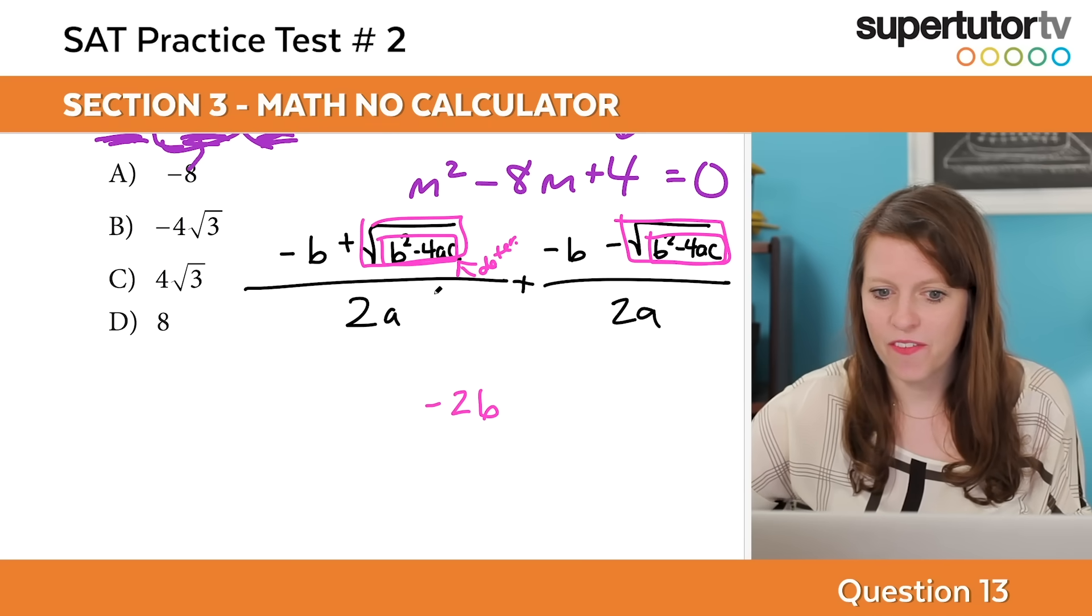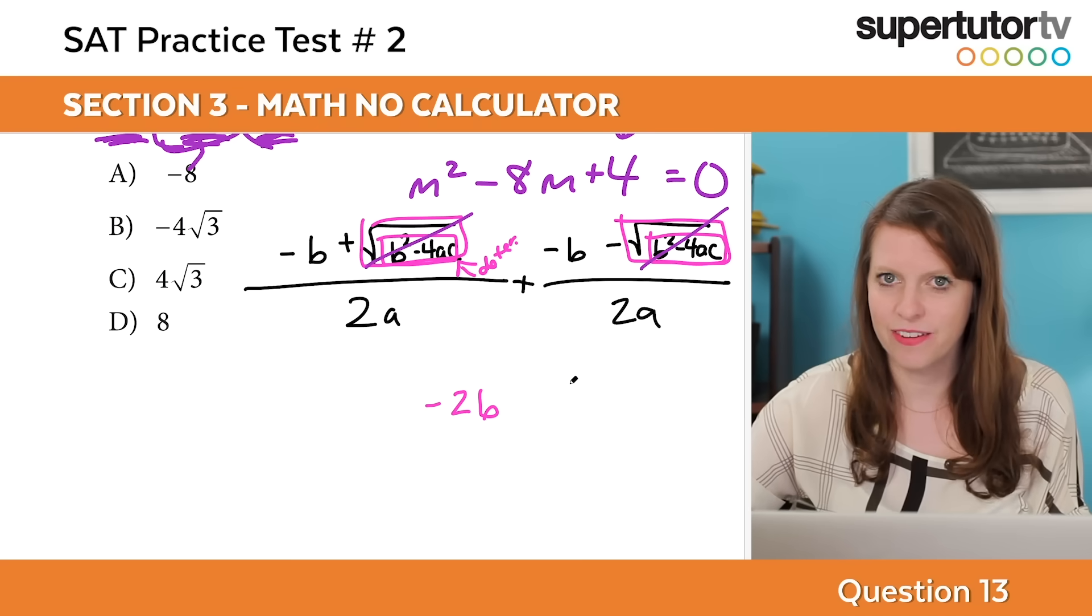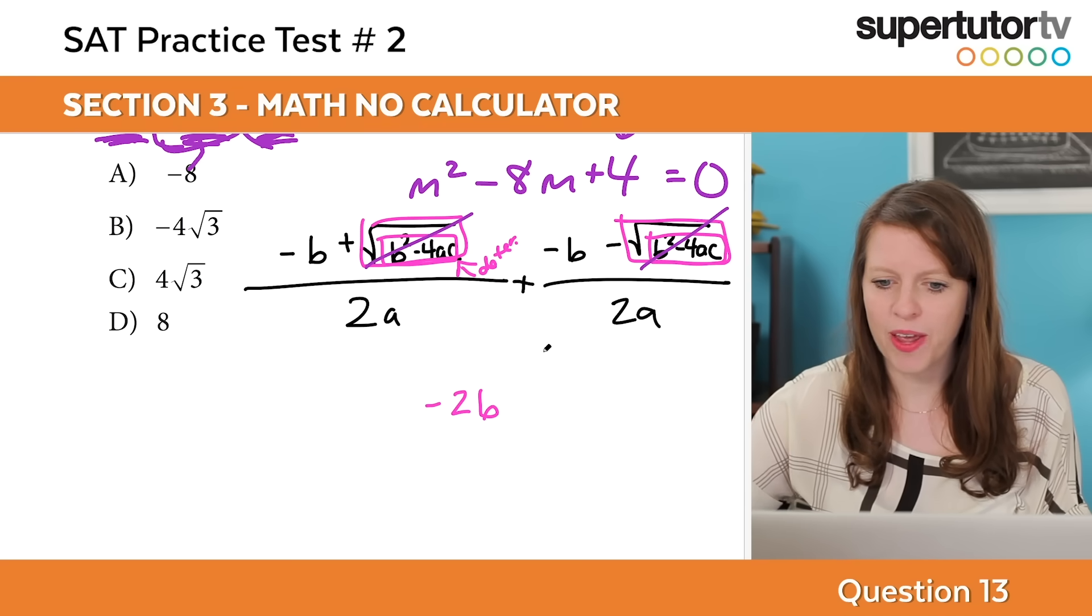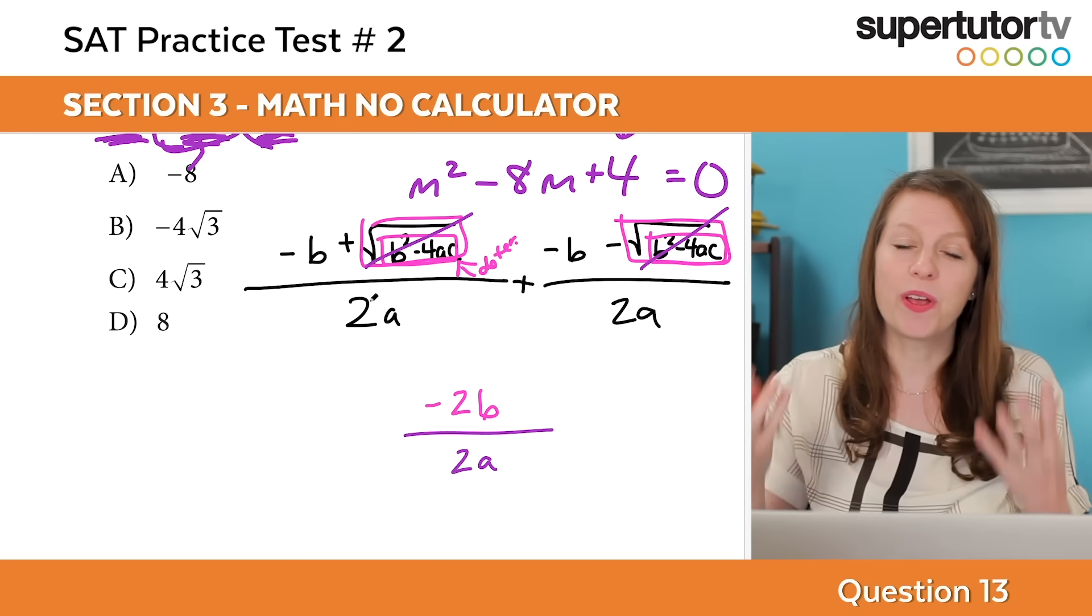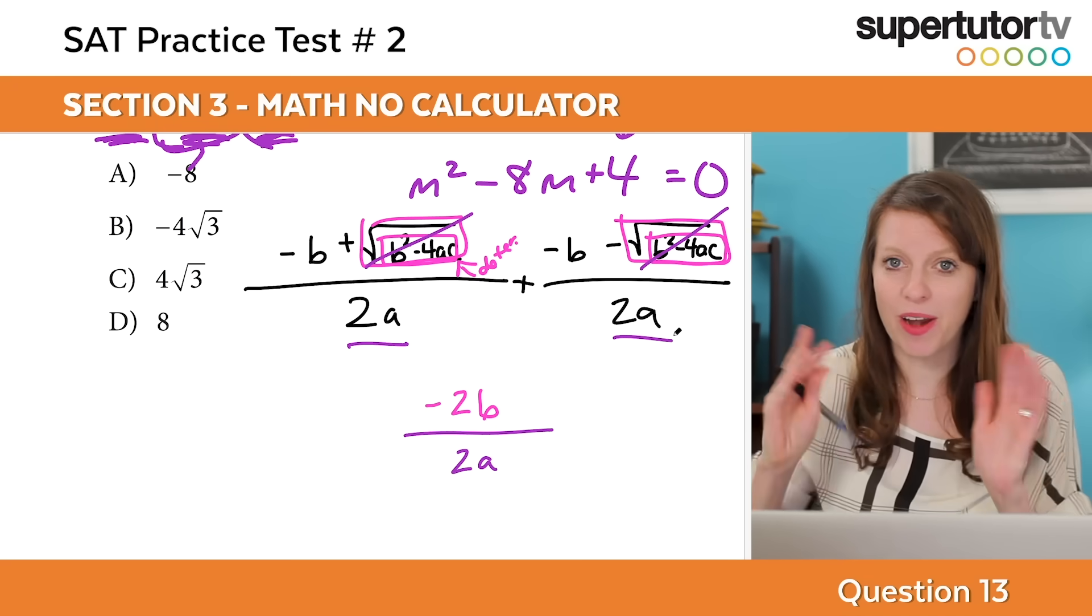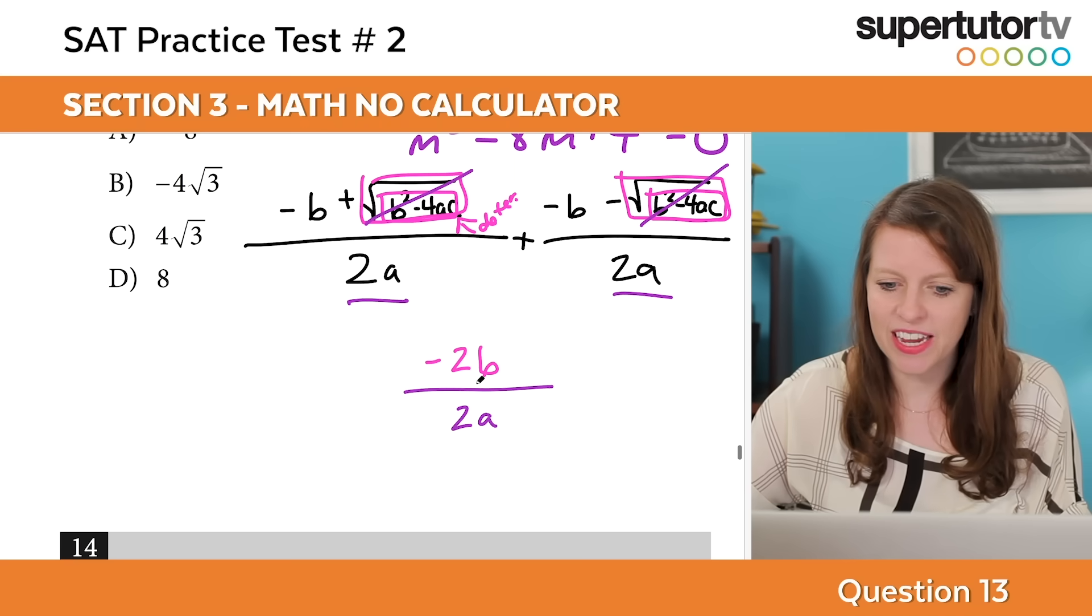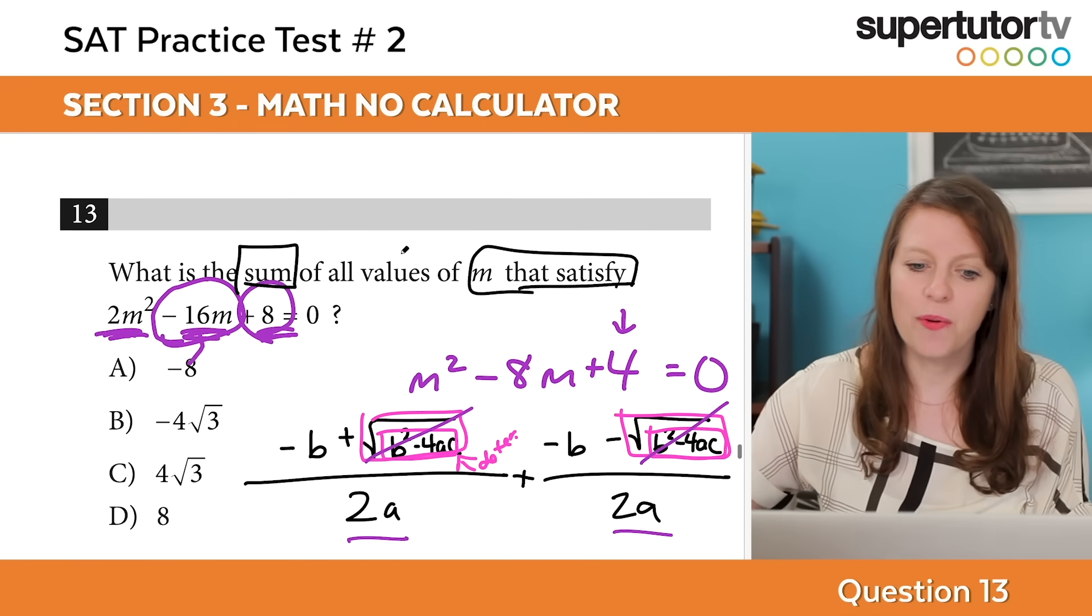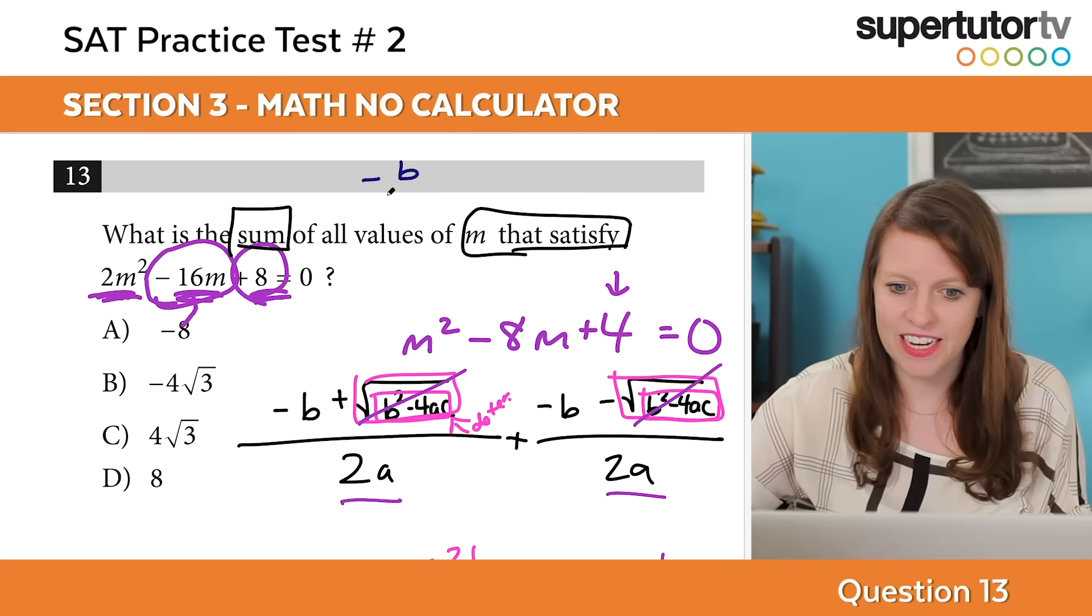When I add these together, I get negative 2b. Plus this ugly thing and minus this ugly thing cancel. That cancels with that. So that's negative 2b over 2a. What I get is negative 2b over 2a which is negative b over a. So here's the stupid formula. The stupid formula is negative b over a. If you find negative b over a, that is always the answer to this question. I don't know why the SAT keeps asking this question.